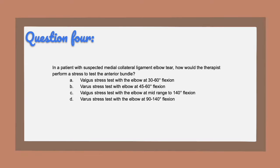Question four: in a patient with suspected medial collateral ligament elbow tear, how would the therapist perform a stress test to test the anterior bundle? A, valgus stress test with the elbow at 30 to 60 degrees of flexion. B, varus stress test with the elbow at 45 to 60 degrees flexion. C, valgus stress test with the elbow at mid-range to 140 degrees flexion. Or D, varus stress test with the elbow at 140 degrees flexion.